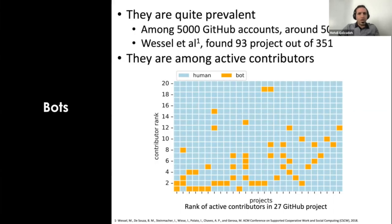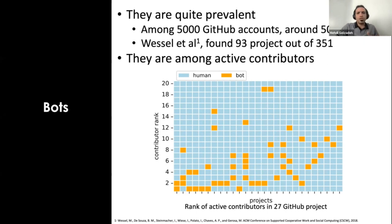Bots are quite prevalent. In one of our studies, after rating 5,000 GitHub accounts to create a ground truth dataset, we found around 500 bots. In another study, Wessel et al. also reported 93 bots in 351 projects. So they are quite prevalent. We also analyzed a small dataset of GitHub repositories and found that bots are among active contributors, so it's essential to study them.